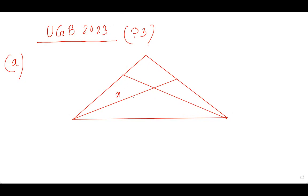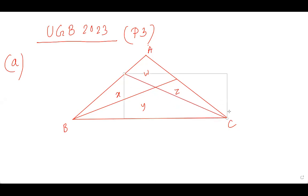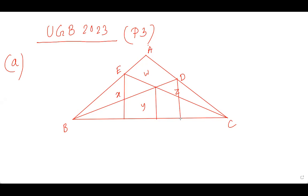The areas are labeled: X, Y, Z, and W. The vertices of the triangle are A, B, C, with points E and D on the sides, and F is the intersection point of BD and CE.